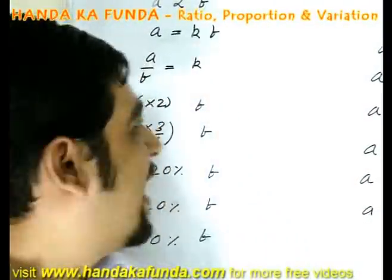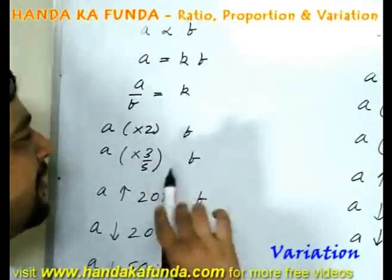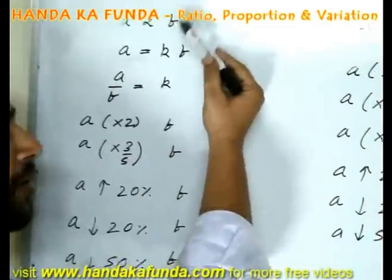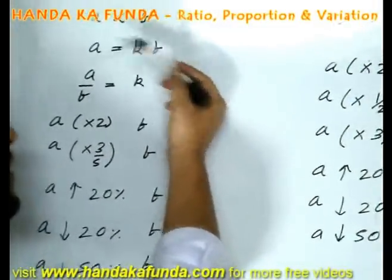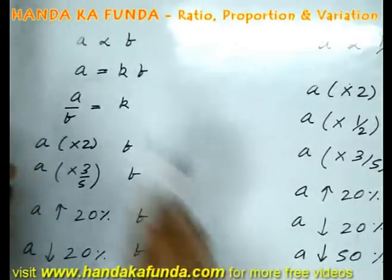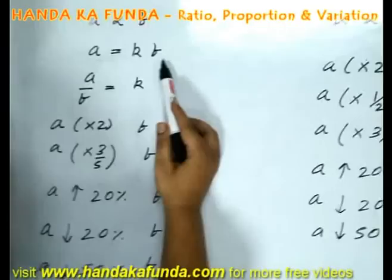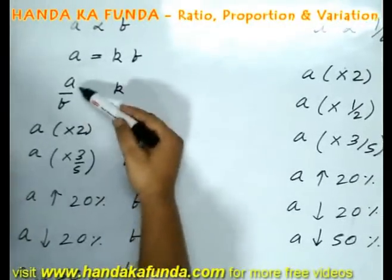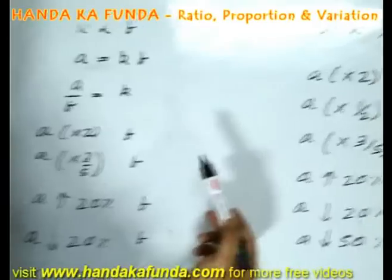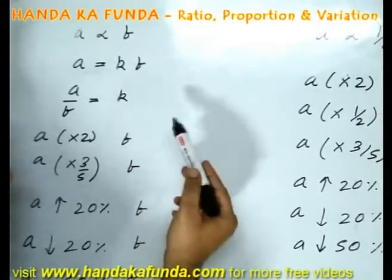Two things are said to be directly proportionate to each other if increase in one causes a proportionate increase in the other, decrease in one causes proportionate decrease in the other. To look at it, you can also say that A is equal to a certain constant into B or the ratio of A by B remains a constant. You can use this idea for solving questions.